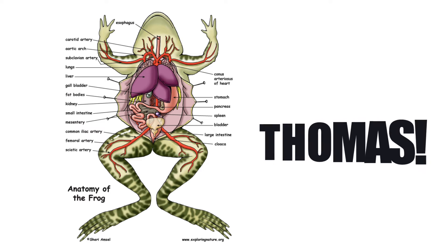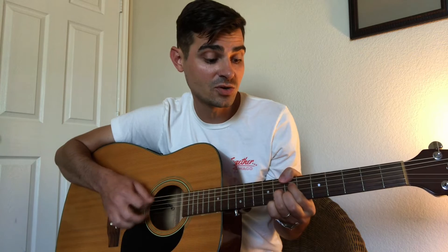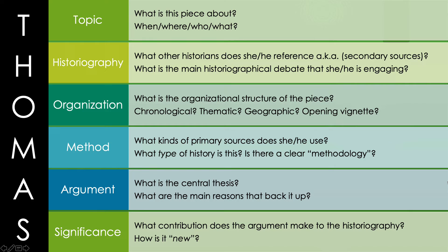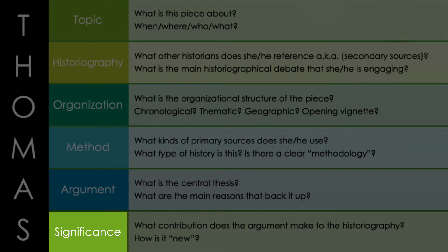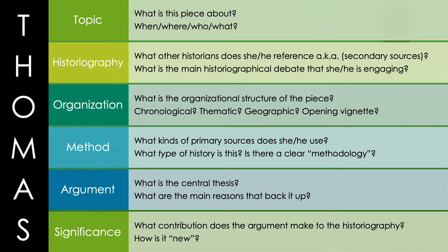And those things are the things that we talked about vis-à-vis the THOMAS acronym: Topic, Historiography and Organization, Method and Argument, Significance. When you read an academic monograph, what you're after is the same thing you're after when you read academic articles. You want to determine a book's topic, historiography, organization, method, argument, and significance. Once you've determined these things, you've accomplished the goal of reading the book, at least for the purposes of writing a historiographic essay. So the real question is: how do you efficiently and effectively determine the THOMAS of an academic monograph?